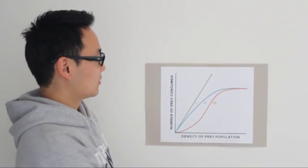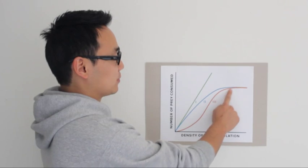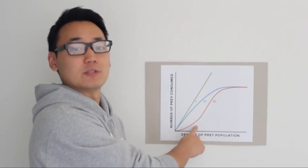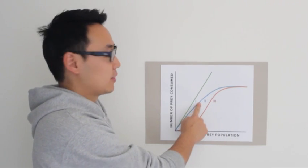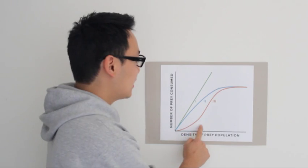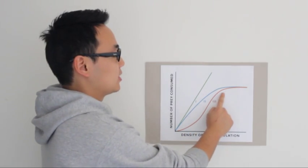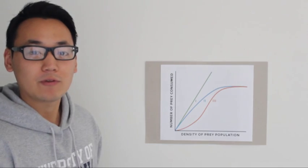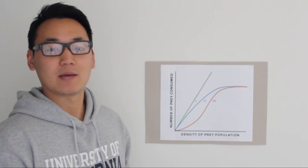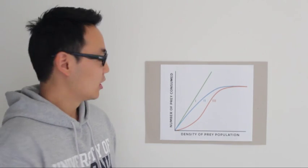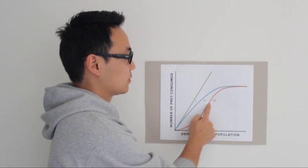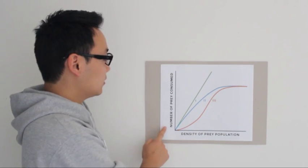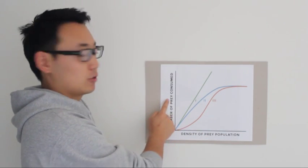What we see here is a type 3 functional response. A type 3 functional response is similar to type 2 in that when there is a high level of prey consumed, there is a plateau. However, a type 3 functional response can be distinguished by its accelerating relationship between the density of the prey population and the number of prey consumed.